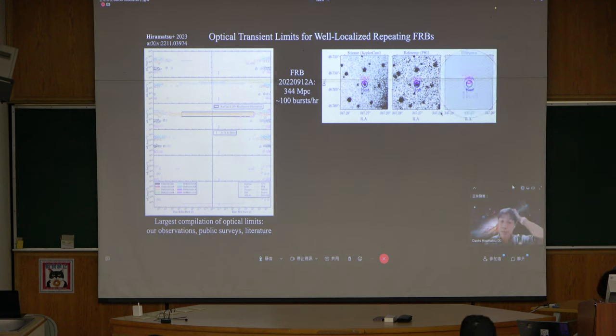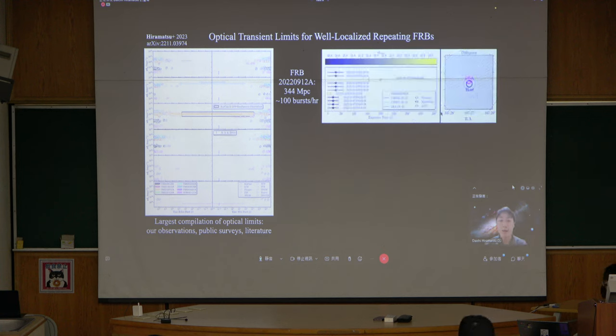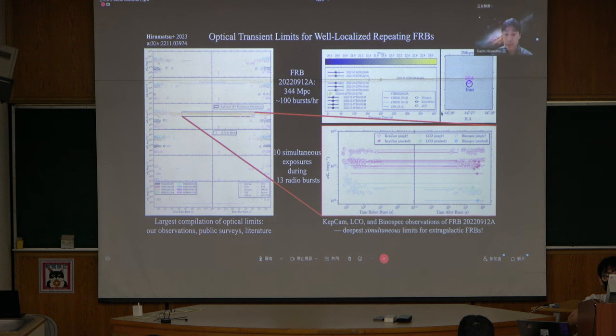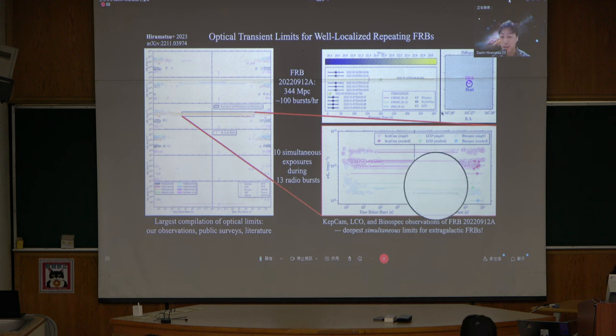This is discovered at 344 megaparsec, which is relatively nearby. When it was discovered, it was really active. The estimated burst rate was about 100 bursts per hour. Here I show the KeplerCam image taken during a radio burst from this particular FRB, showing the DSA localization and the host galaxy here. This is a reference image from Pan-STARRS, and for the difference, you don't see anything. We obtain such limits for 13 radio bursts in 10 optical exposures.